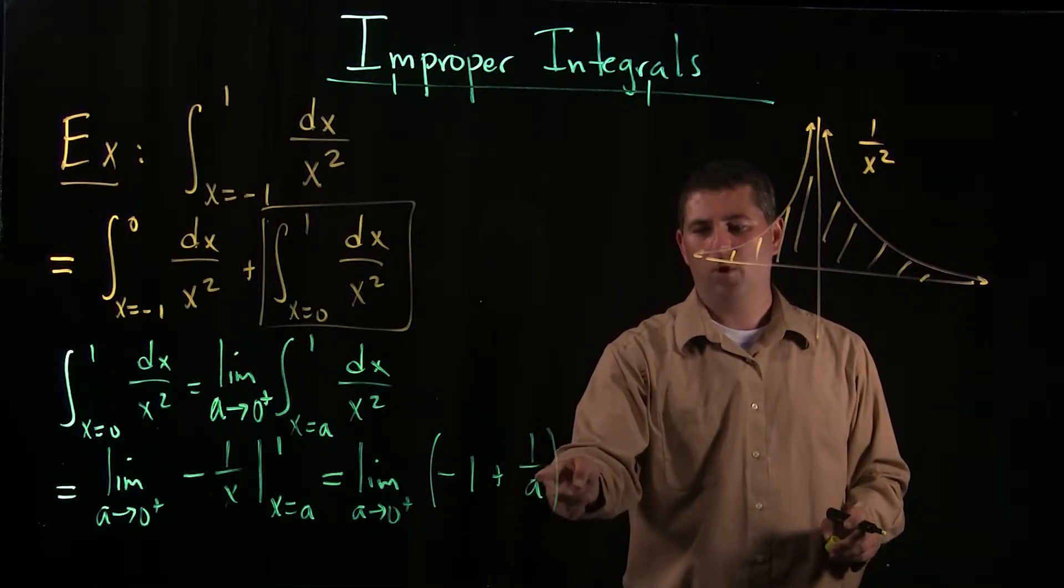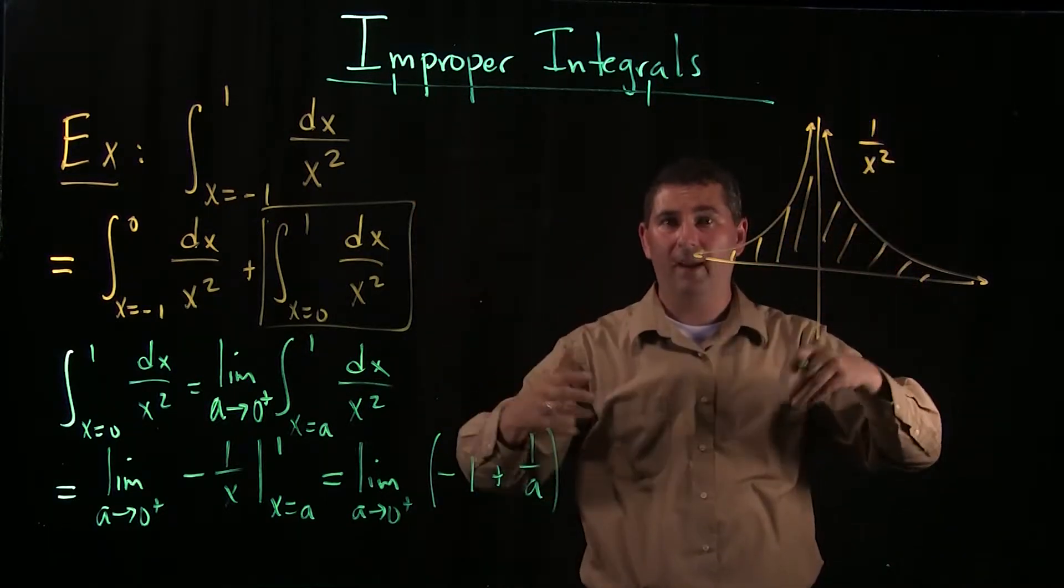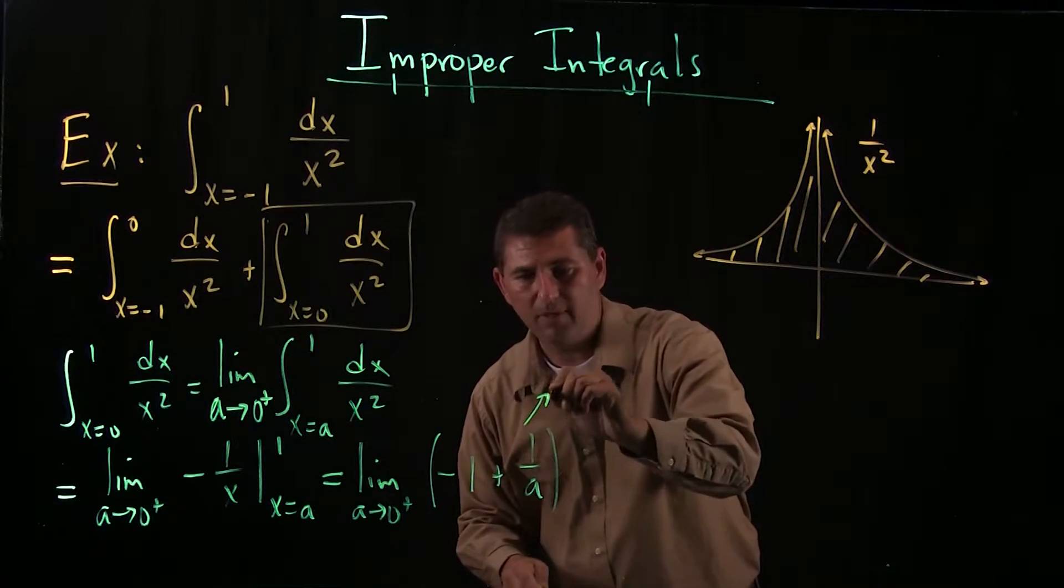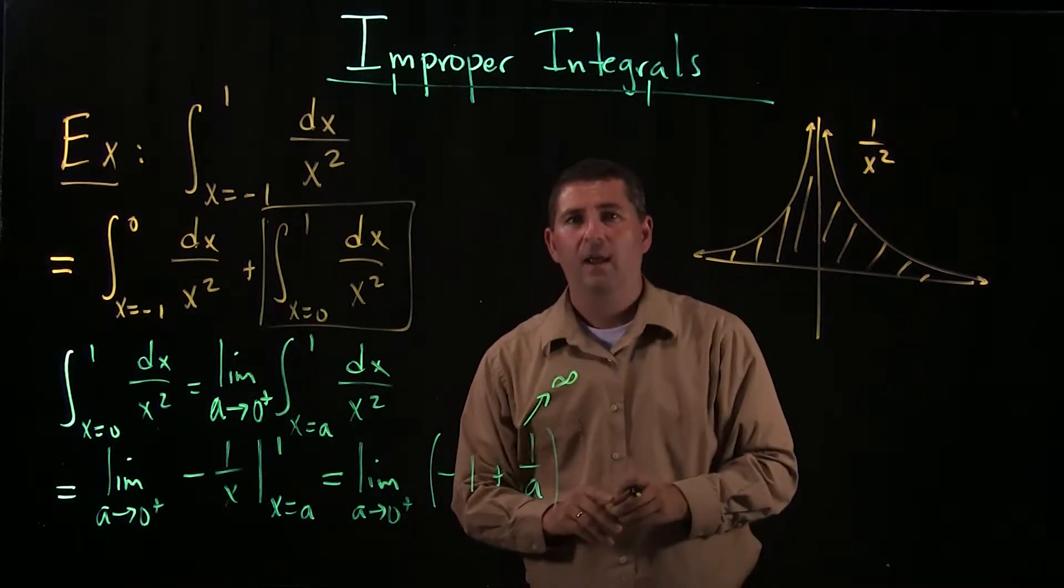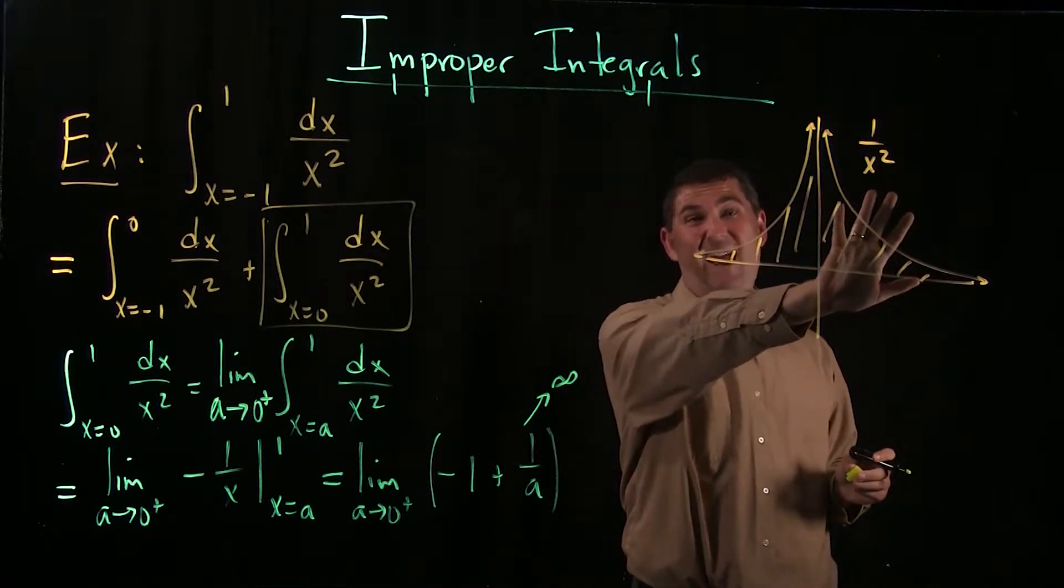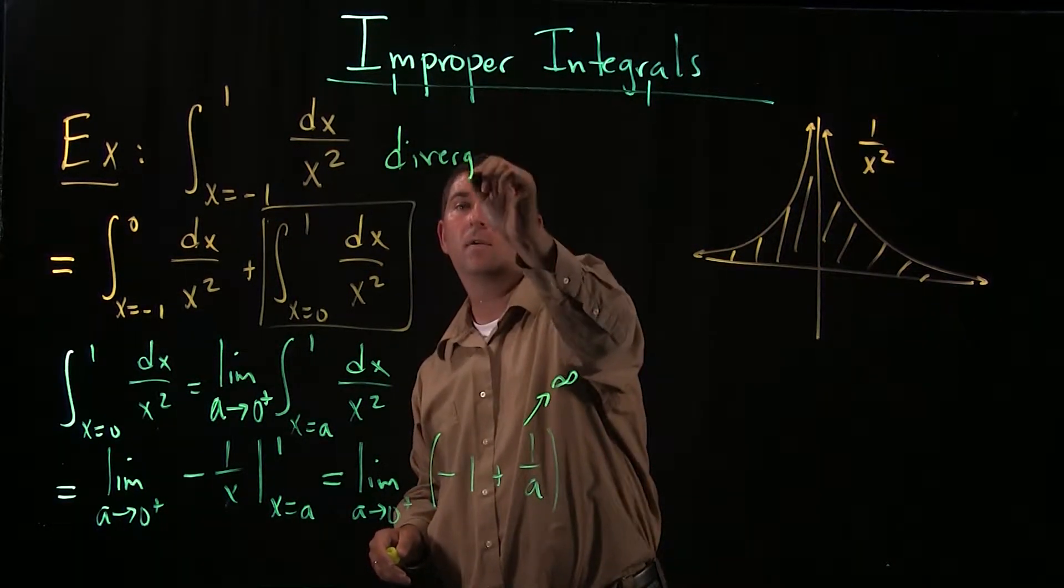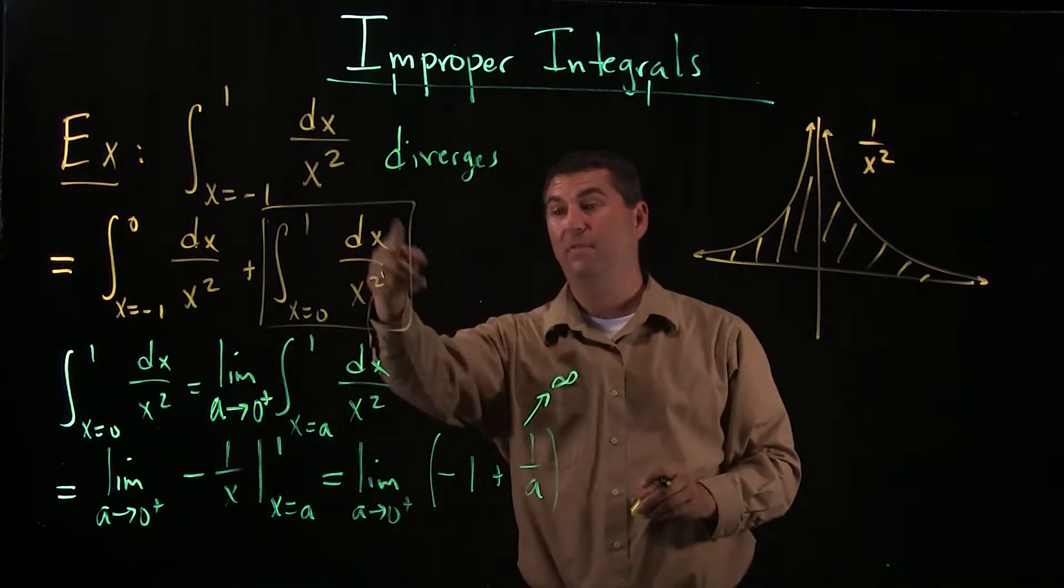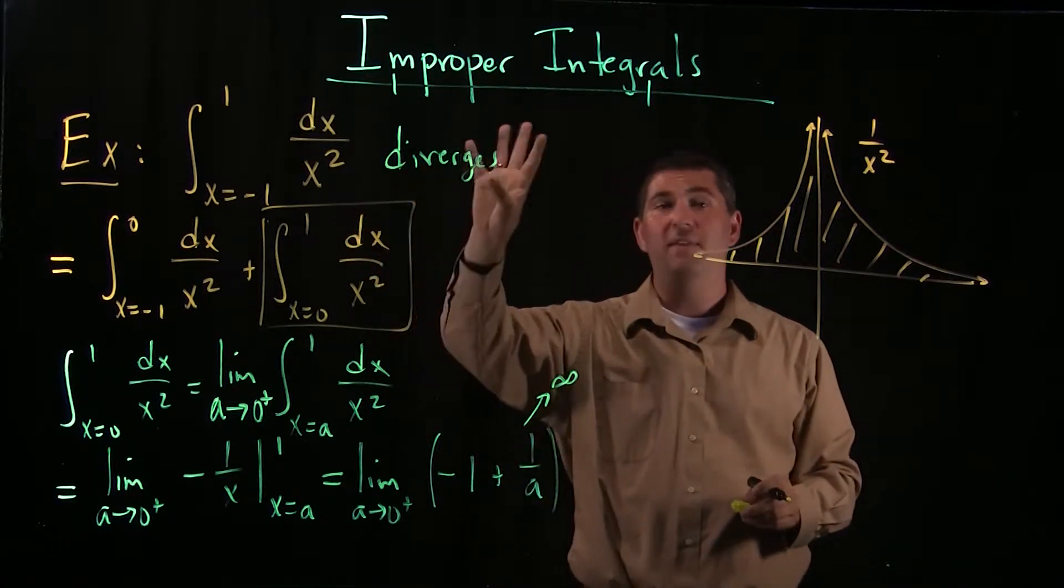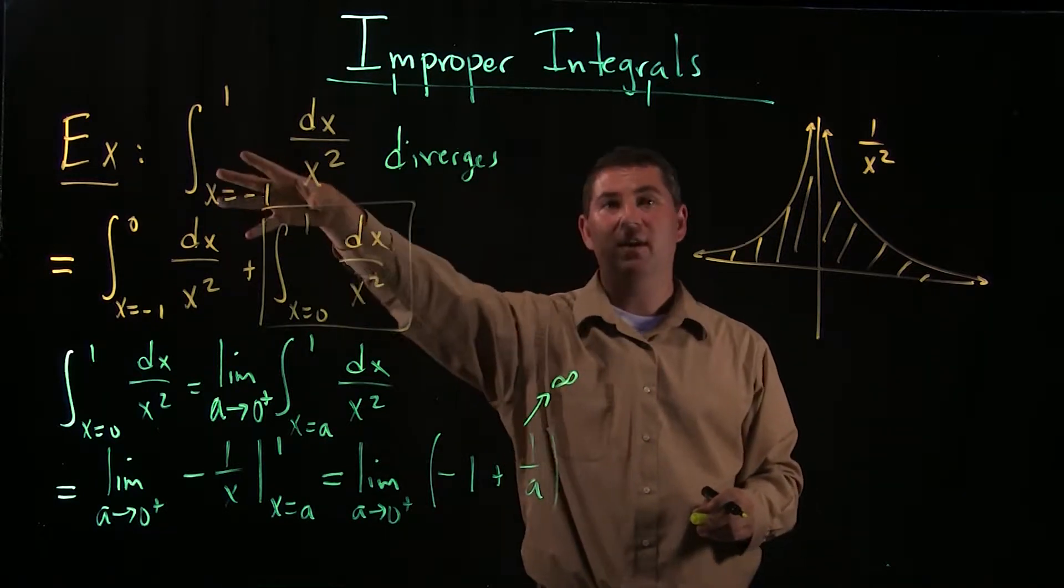I still have a limit, I evaluate at the endpoints. So I get negative 1 minus minus is plus 1 over a. Now what is happening as a goes to 0 to 1 over a? As a is getting smaller and smaller, the denominator gets smaller, the fraction gets bigger and bigger. As a goes to 0, this thing blows up, so this guy goes to infinity. And this explains why we're going to have a little bit of problem. The area doesn't actually converge to some number. This guy here diverges.